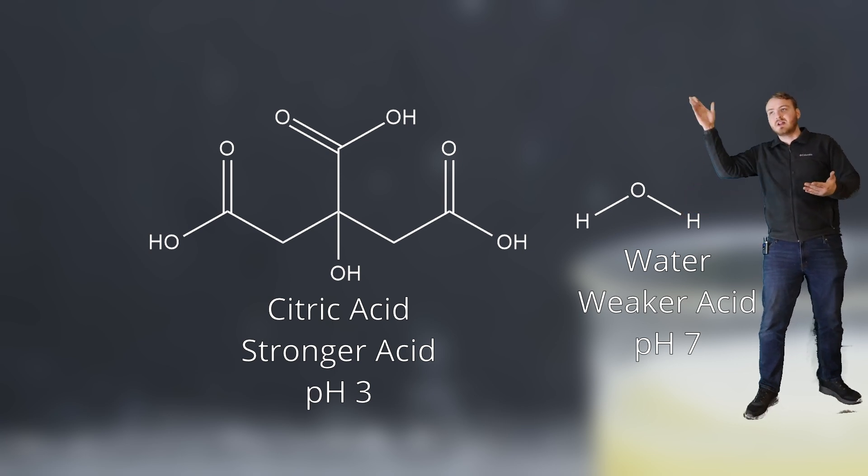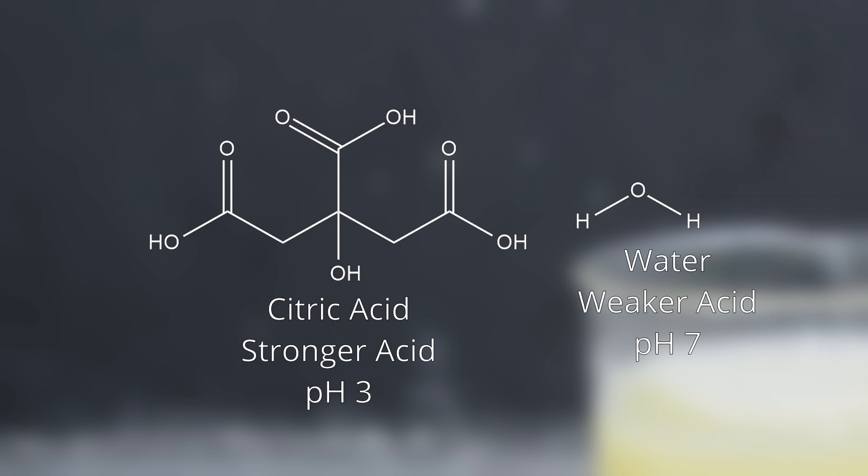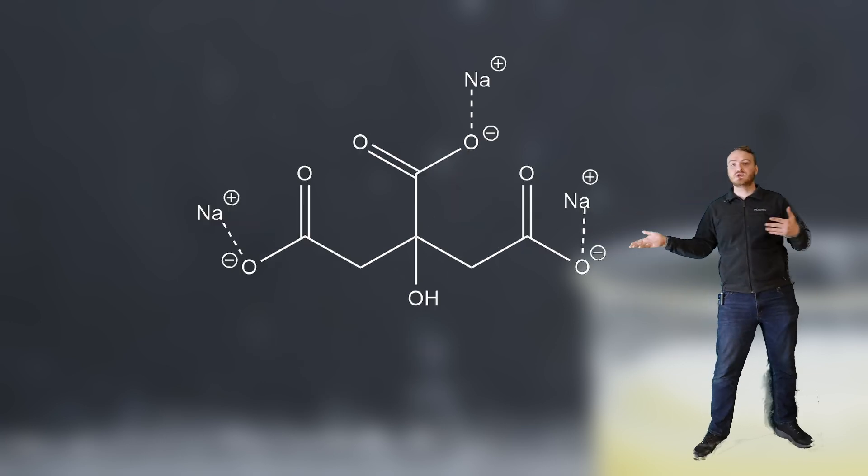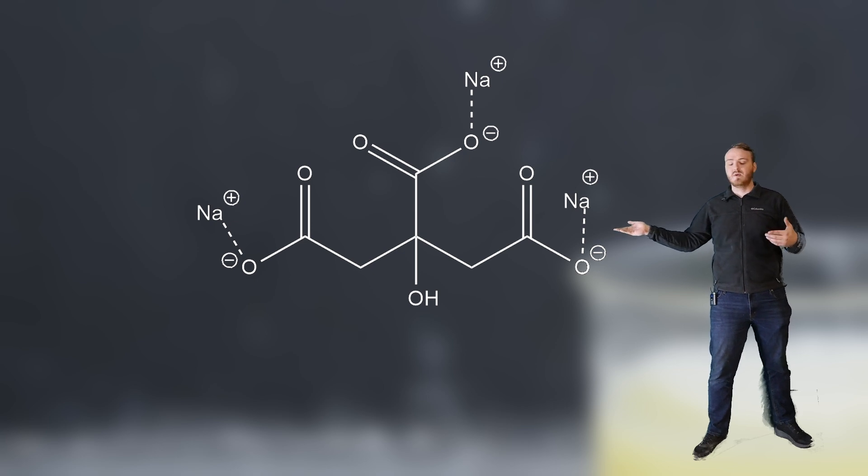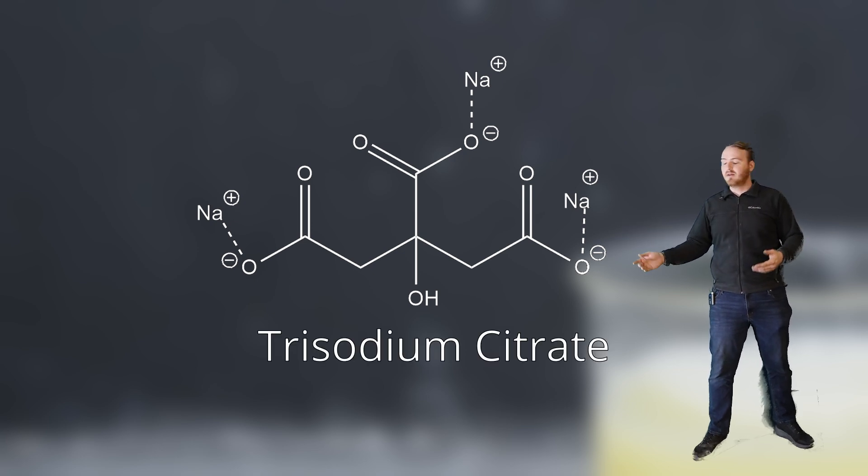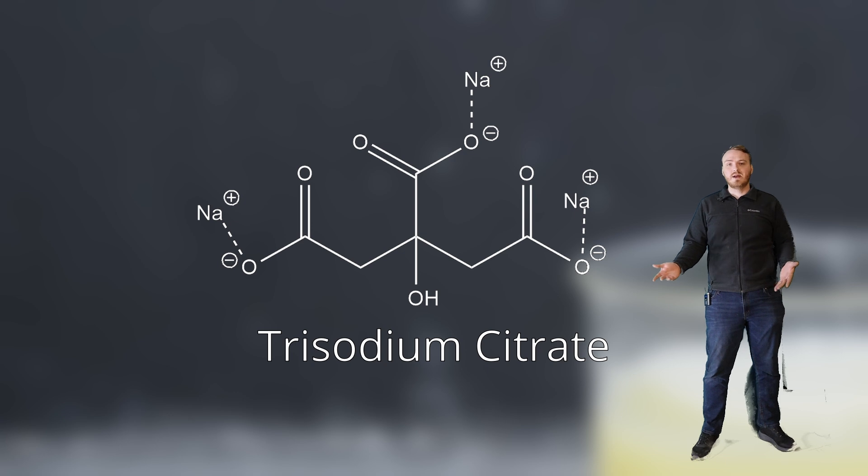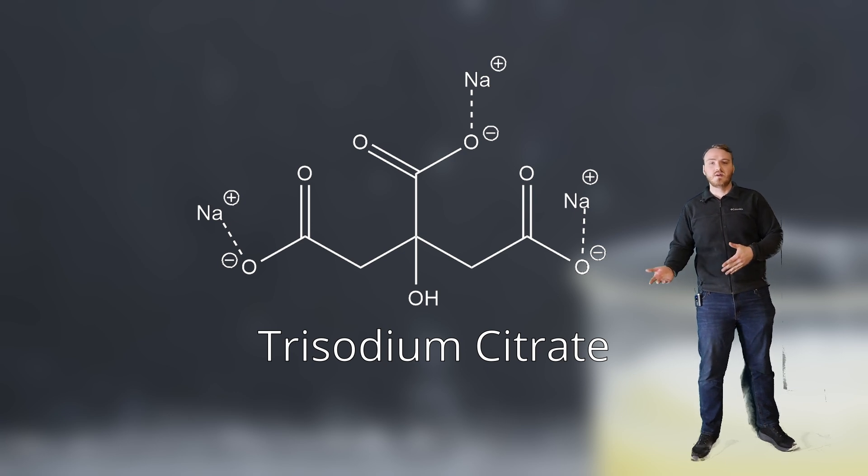The higher the pH, the weaker the acid, so it's actually becoming weaker. And because we know acids like to become weaker, we know that this reaction is going to happen. Eventually all of the hydrogens are going to be replaced with sodium and we're going to have trisodium citrate. So why did we do this? Why do we want to make trisodium citrate? Now it's a salt. Before it was an acid and now it's a salt.